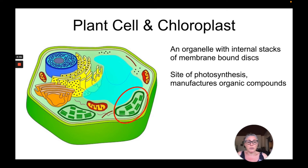This is where photosynthesis happens, and what we can say is that it manufactures organic compounds. Remember, glucose is an organic compound.